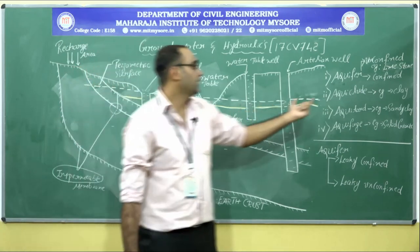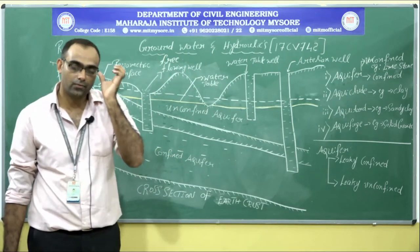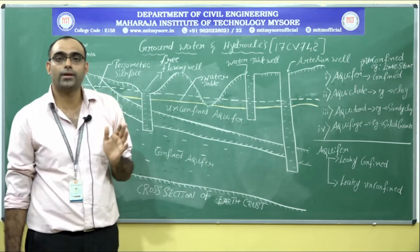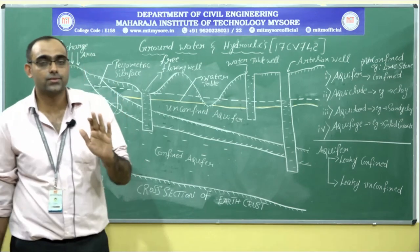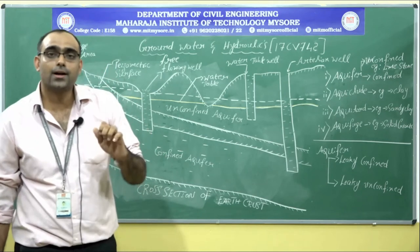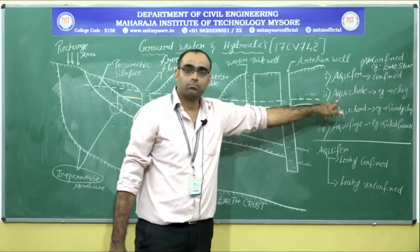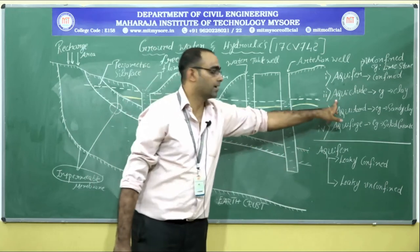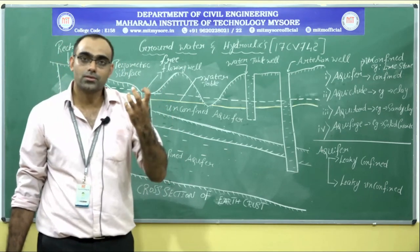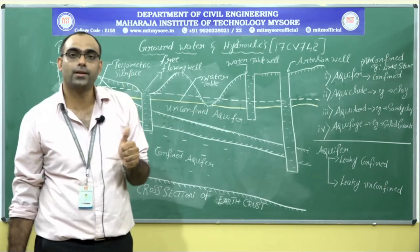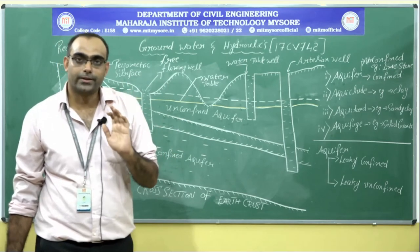The next geological formation is the aquiclude. Aquiclude is defined as a geological formation which has water stored in it because it has good porosity, but since it is very weak in permeability, it cannot yield the water. Such geological formations are called aquiclude. An example of an aquiclude is clay.